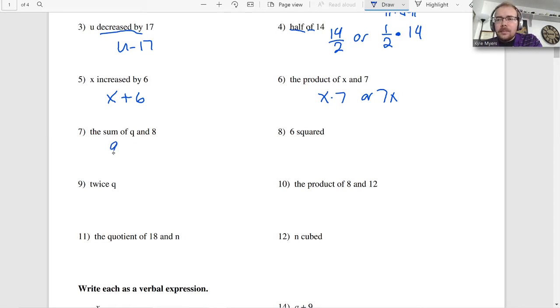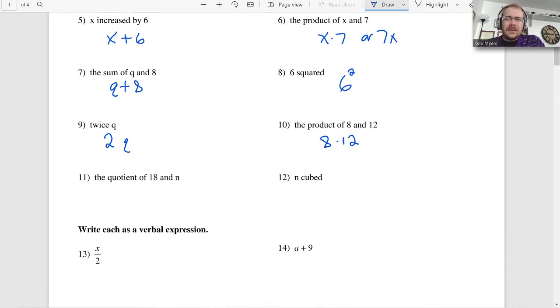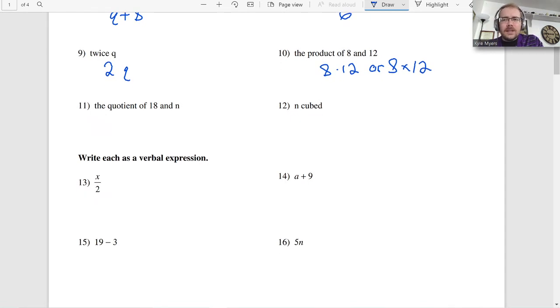The sum, so Q plus 8. 6 squared. Twice Q, 2 times Q. Or you could put Q times 2, the way I did it on number 6. The product of 8 and 12. I'm just going to put dots. You could put an X for that one since there is no X. So you could say 8 times 12 like that. But since there's X in other problems, it kind of makes more sense to just do the dot. The quotient of 18 and N. So 18 divided by N. You can also write 18 divided by N like that, with the little division sign. Either one would be fine, actually. N cubed. Squared is the little baby 2. Cubed is the little baby 3. Because a cube is a three-dimensional shape.